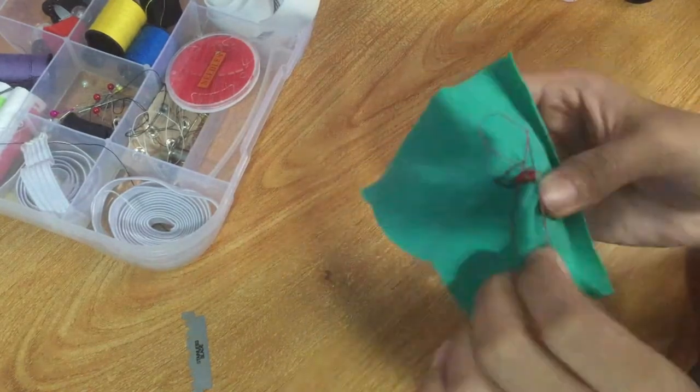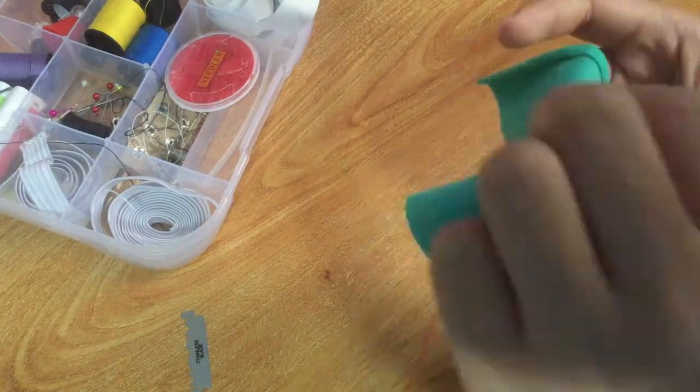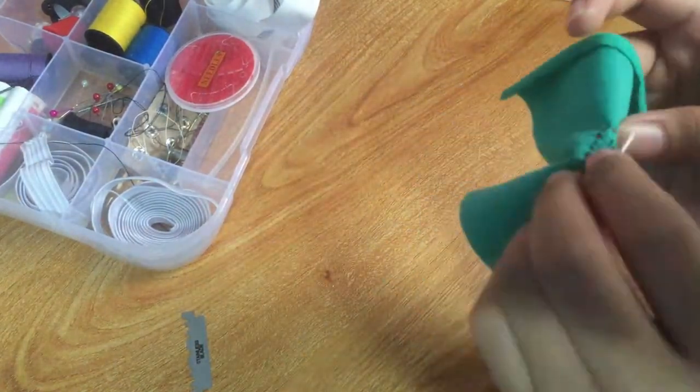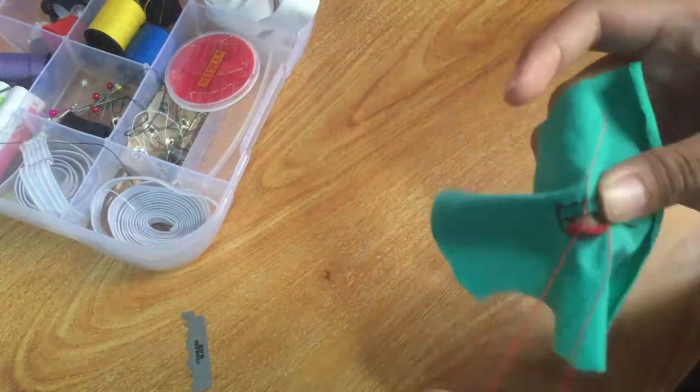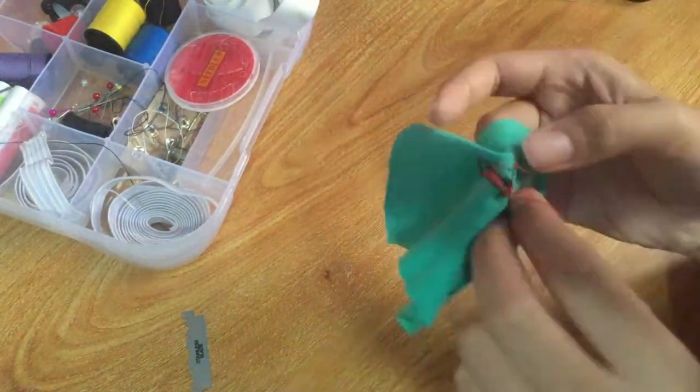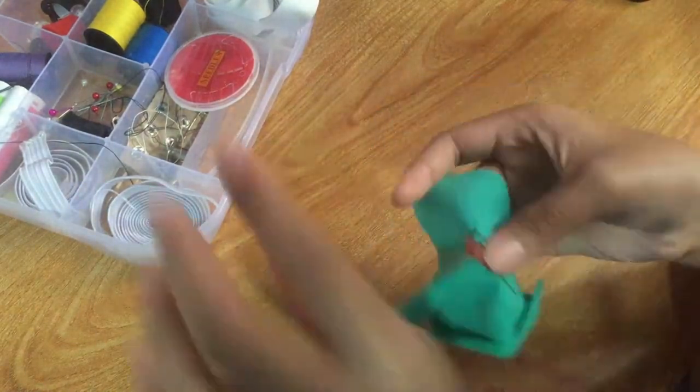Insert the needle for buttonhole stitch from the top to the cut edge. Wrap the thread around the needle at the bottom, going under the tip of the needle to make the buttonhole stitch.